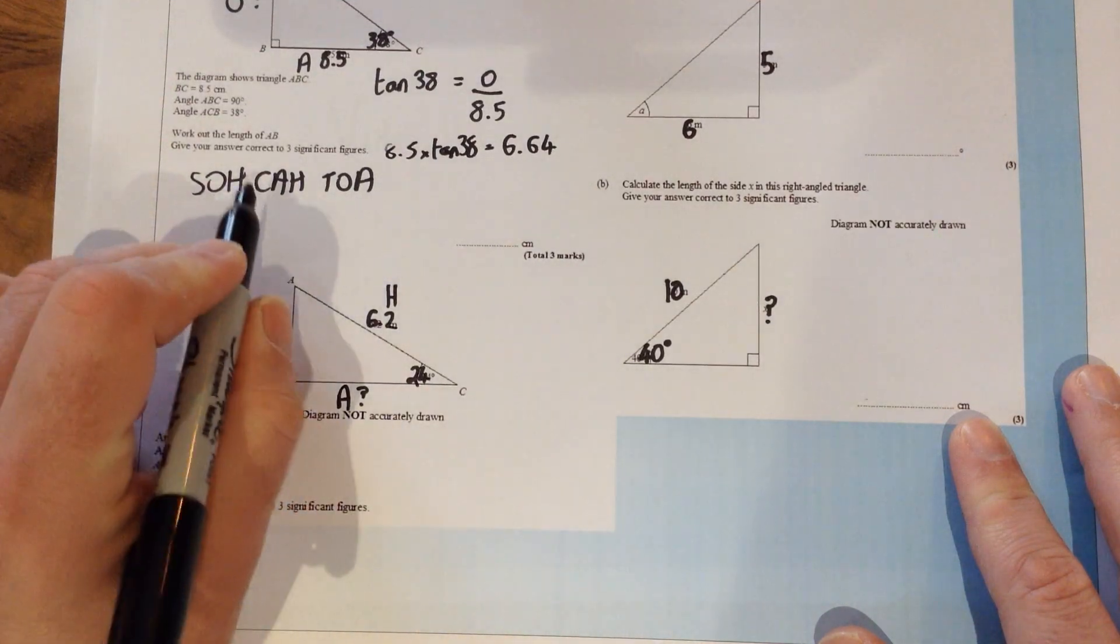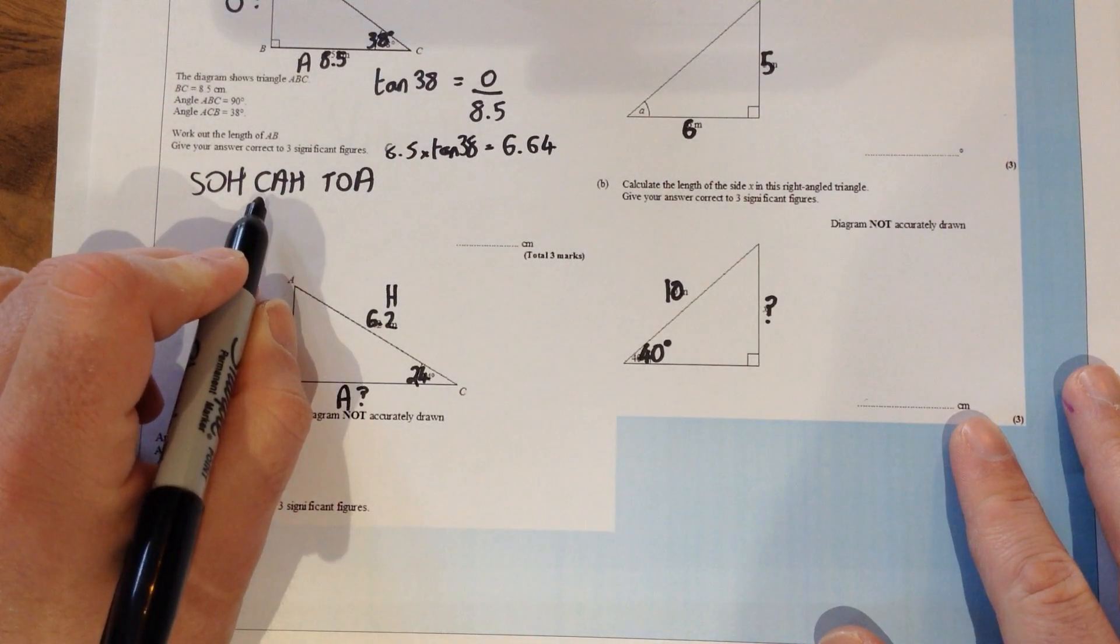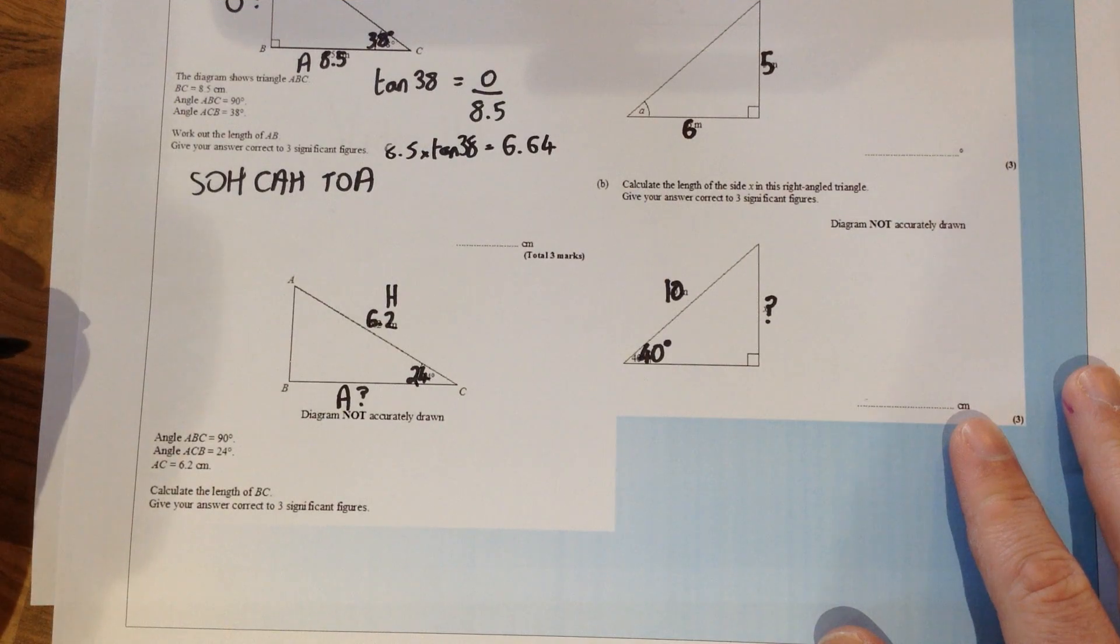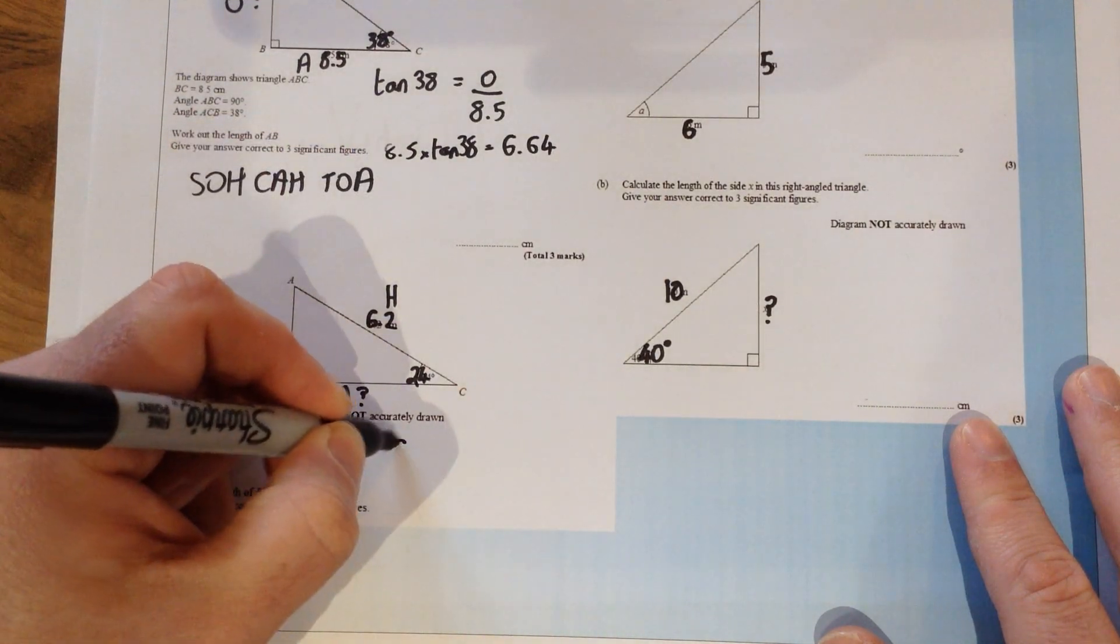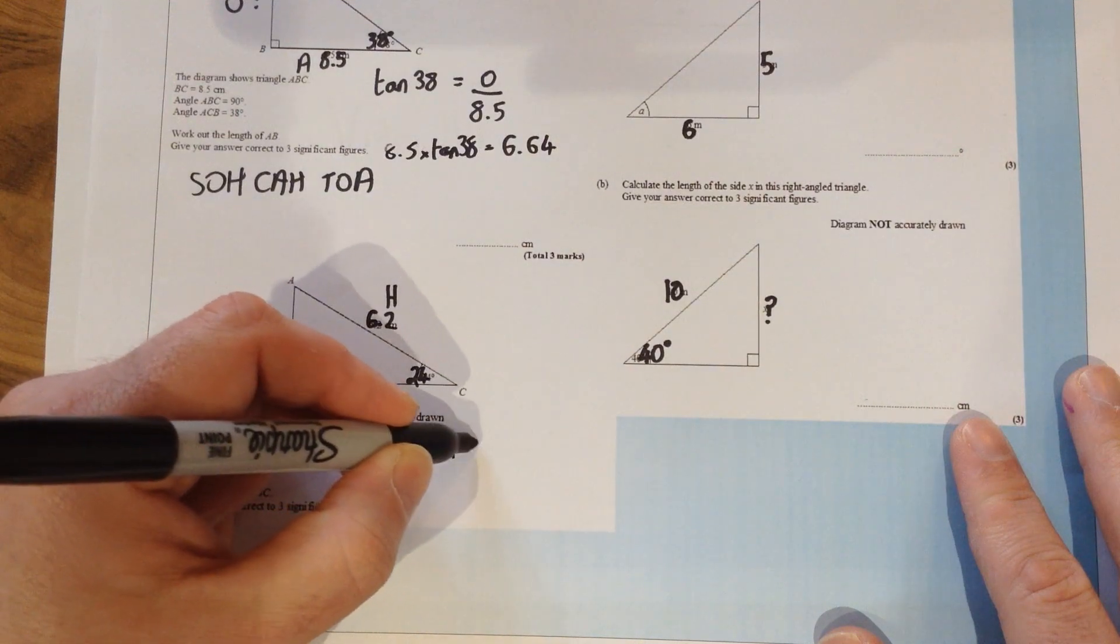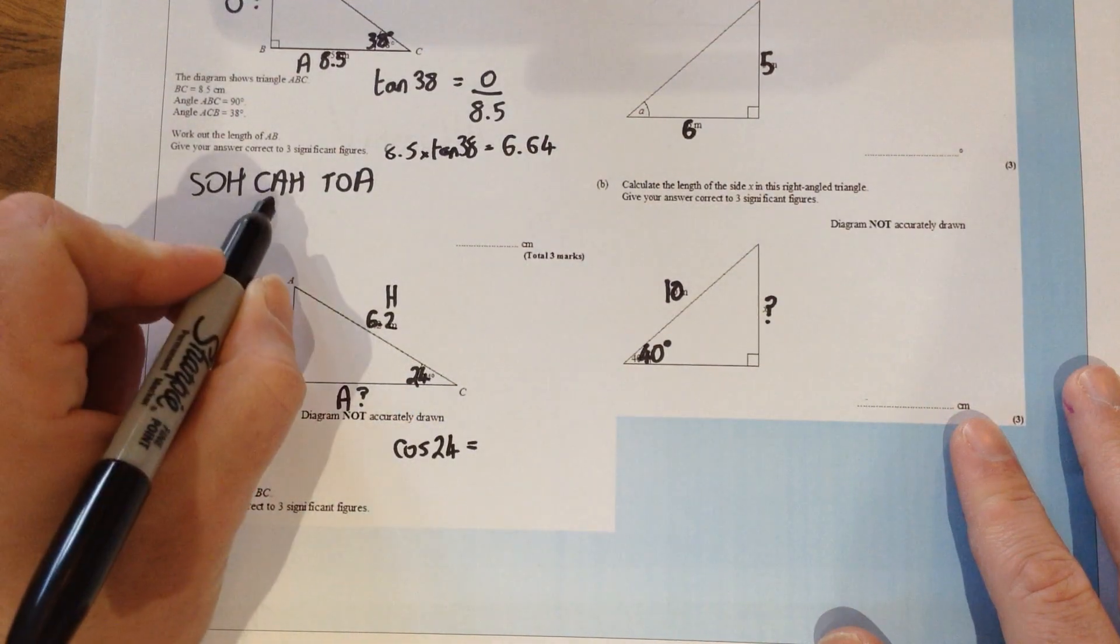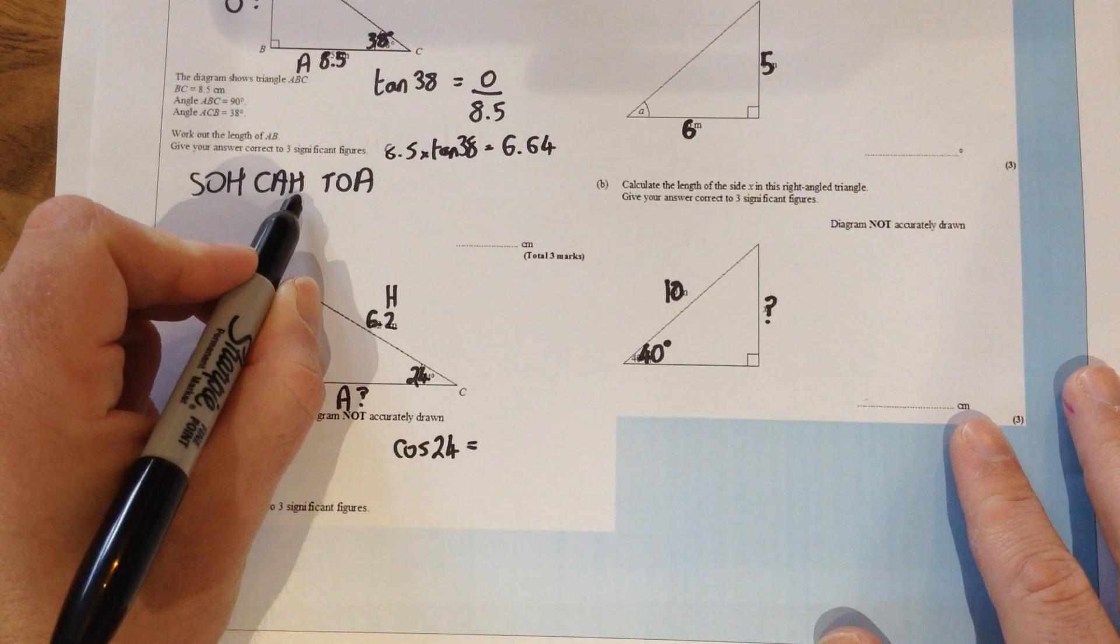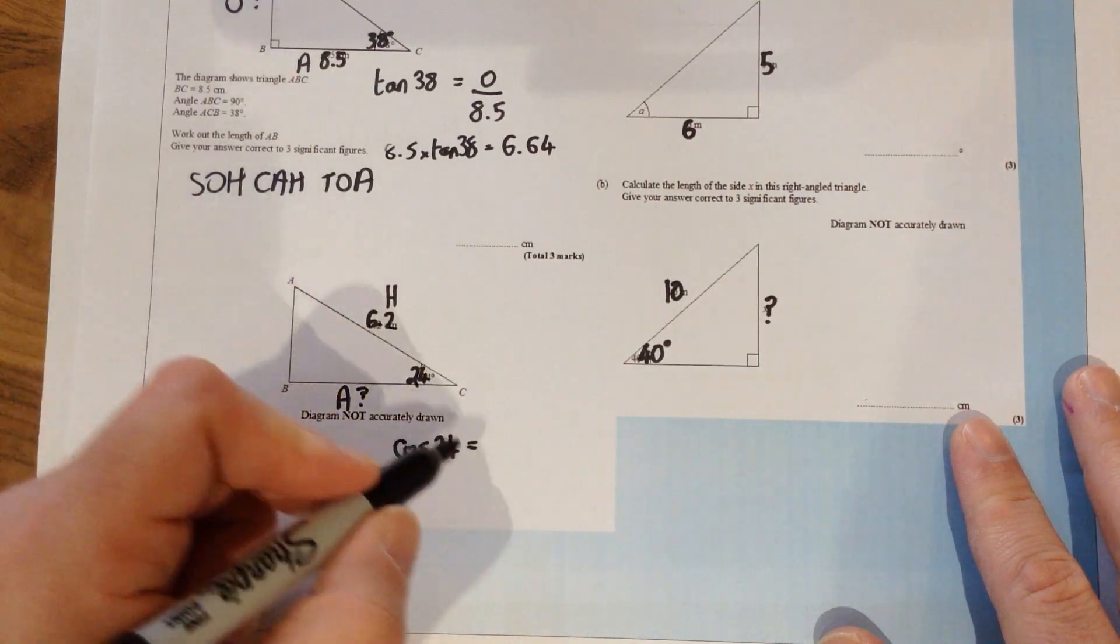A and H are preceded by the letter C so we're going to use cos here. So again similar to the question before, we've got the cos of the angle so cos of 24 is equal to adjacent over hypotenuse. It goes in the order of SOHCAHTOA.